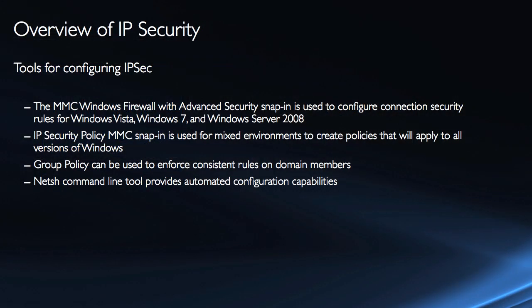You still can use the IP Security Policy MMC snap-in for mixed environments and to create policies that apply to previous versions of Windows as well. The key benefit to using Group Policy Objects is that you can apply the rules once, link them to an Active Directory container, and they're in effect for all computers in that container, like a domain or an OU. For automation, you can use the NetSH command line tool with the ADV firewall context to set these via command line.